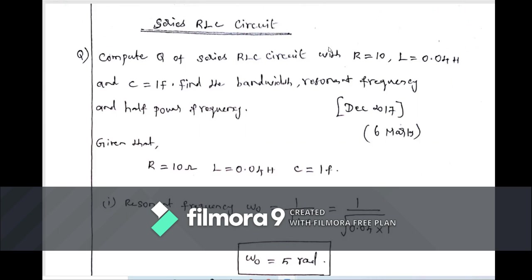The first question: compute the Q of a series RLC circuit with R equal to 10 ohms, L equal to 0.04 henry, and C equal to one farad. Find the bandwidth, the resonant frequency, and the half power frequency.